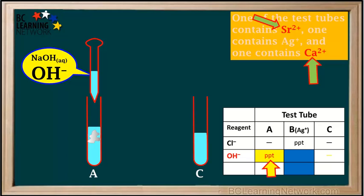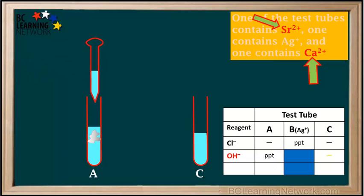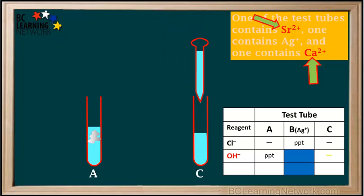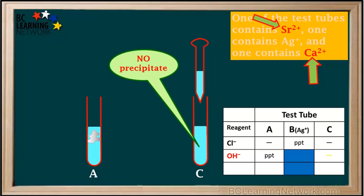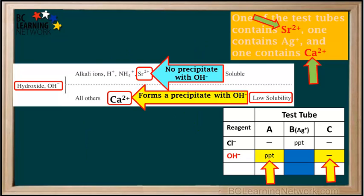Now we'll try hydroxide in test tube C. We remove the pipette, refill it with NaOH, and add the hydroxide solution to test tube C. No precipitate formed when we added hydroxide to test tube C, so we'll add a dash in the cell for OH- in test tube C to indicate no precipitate.